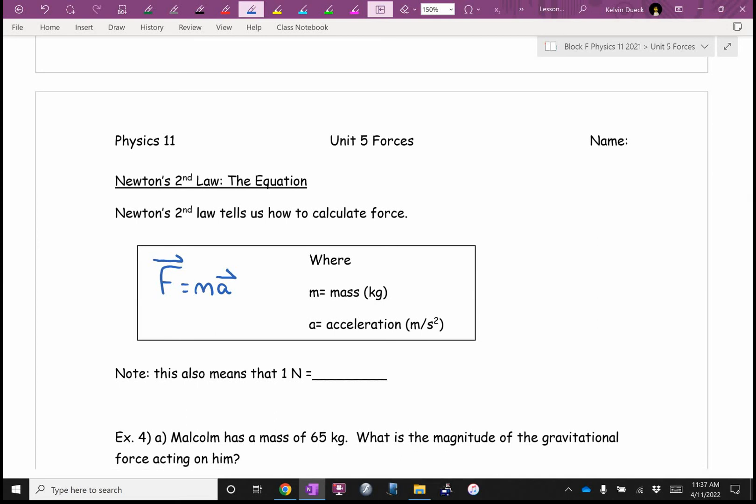Oh, this also means that technically, one newton is one kilogram meter per second squared, because if force is mass times acceleration, it's got to be kilograms times meters per second squared.